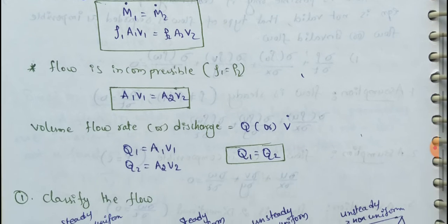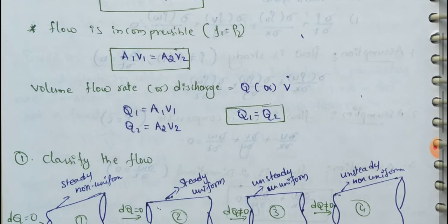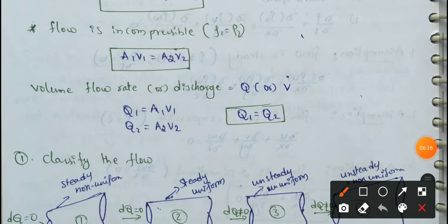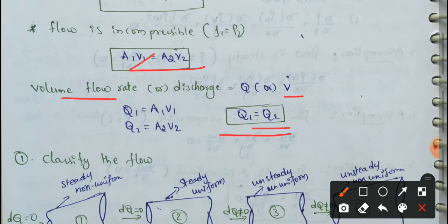That means flow rate or discharge. Discharge is denoted by Q, and volume flow rate is denoted by V̇. Here, Q = AV. Therefore Q₁ = A₁V₁ and Q₂ = A₂V₂. Finally, A₁V₁ = A₂V₂, meaning Q₁ = Q₂. This is the continuity equation.